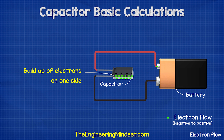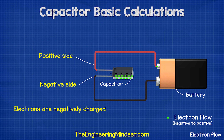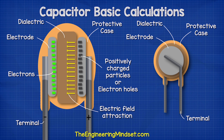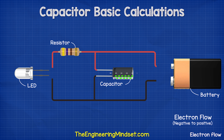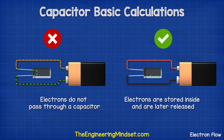Inside the capacitor, lots of electrons have built up on one side. They are prevented from moving across due to the insulating material between the two sides. As electrons are negatively charged, we therefore have a build up of charge on one side compared to the other, creating a voltage difference between the two leads. These electrons are held in place and the capacitor can hold this charge for very long periods of time. When given a path, they will discharge until the capacitor is empty. Electrons do not pass through the capacitor — they simply build up inside and are then released.